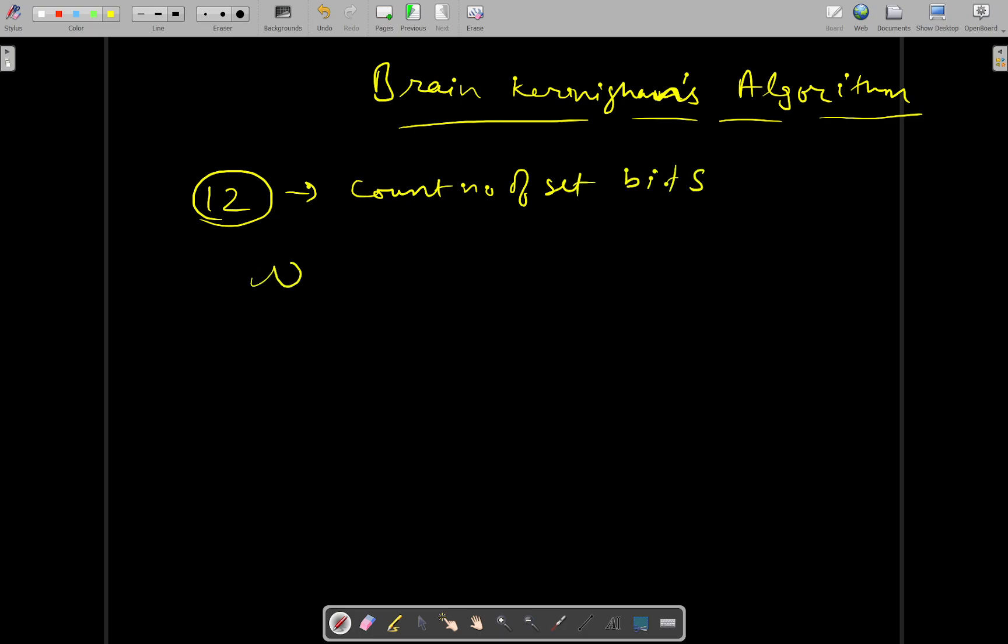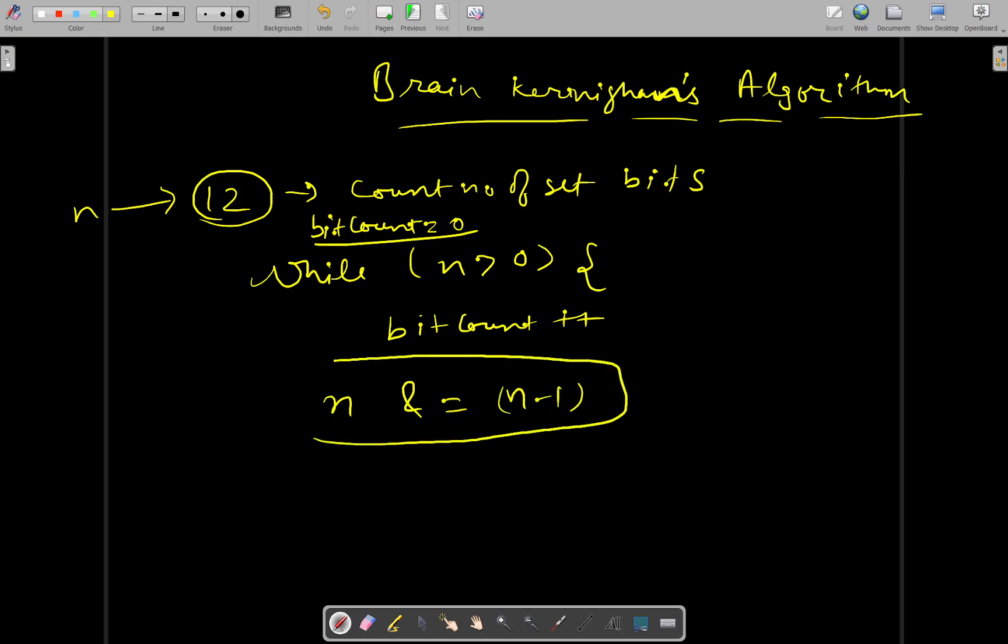Then this algorithm runs something like this: while, let's call this number n, n is greater than 0, you will do the following. Then you will set a variable bit count, which will initially be set to 0. Then within each iteration, you will increase the bit count, and the new value of n will be n AND (n minus 1). Now all the logic lies here in this particular statement. What we are doing here.